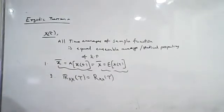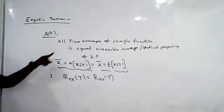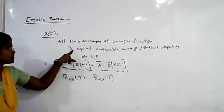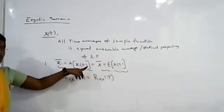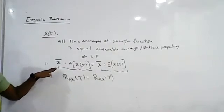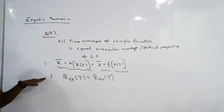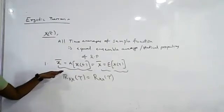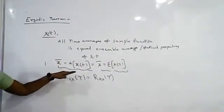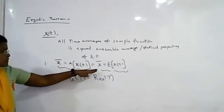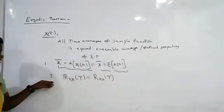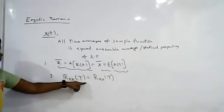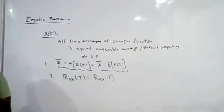The Ergodic theorem states that for any random process, all time averages of a sample function are equal to the ensemble statistical averages of the random process. It has to satisfy these two conditions: x-bar equals A of x(t) equals capital X-bar equals E of x(t), and R_xx(tau) equals R_xx(tau).